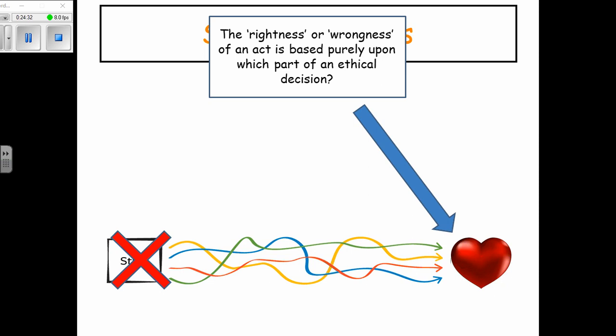This has led to criticism of situation ethics because, just like utilitarianism, it means anything is acceptable — killing, stealing — as long as in the situation it produces love for the greatest number. Lots of people have said that is too extreme, and Jesus wouldn't have done those things.